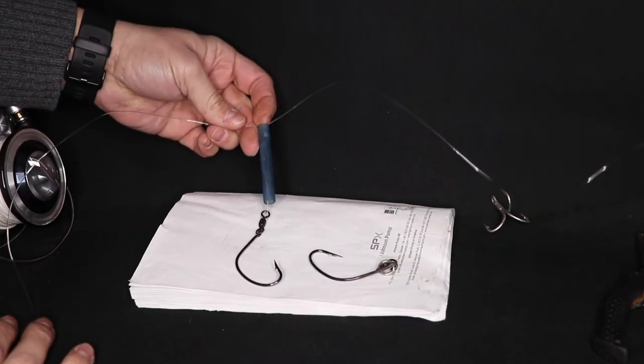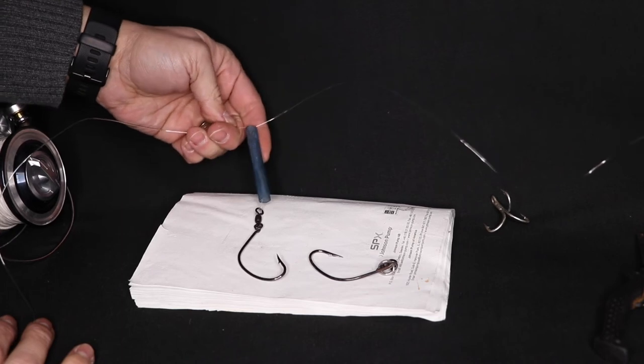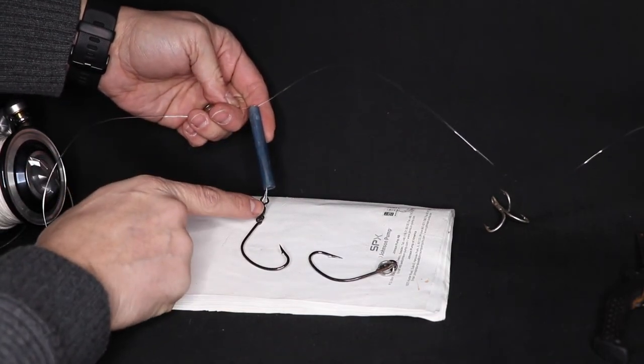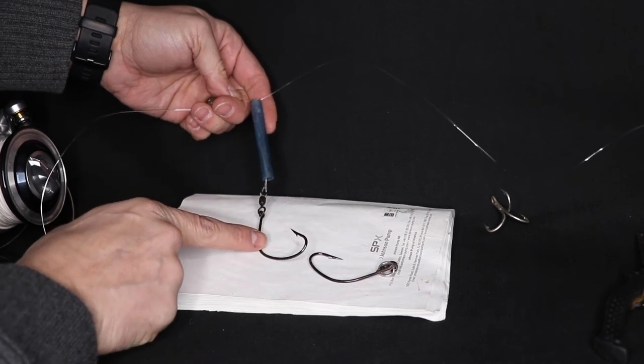The finished product: dropper loop to a barrel swivel to your kale hook.